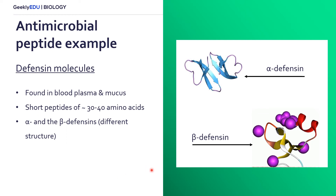Looking a little bit closer at antimicrobial peptides, I'm going to give one example of a very common antimicrobial peptide within our body, which are defensins. Defensins are found mainly in our blood and in mucus, predominantly within our lungs. These are short peptides of about 30 to 40 amino acids long. They come in two main types: the alpha and beta defensins, which basically have different protein structures. Here's a figure showing the alpha defensin and the beta defensin.